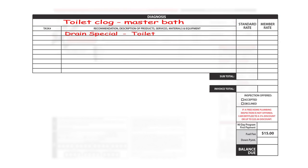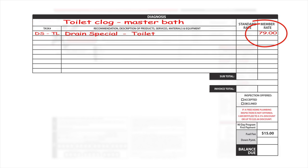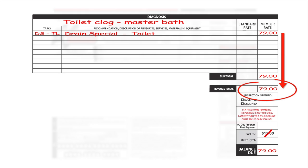Below that will be the same as previously annotated, but also the task number and the standard and/or member price. After all services are performed and any additional services written, you will subtotal it and provide an invoice total to the customer, along with the minimum service charge.